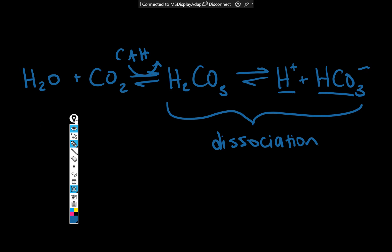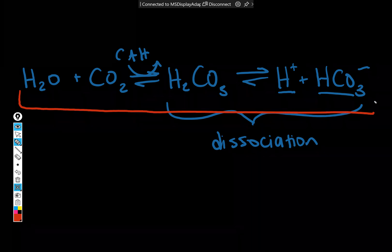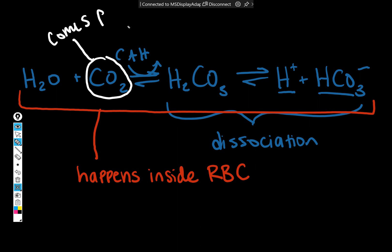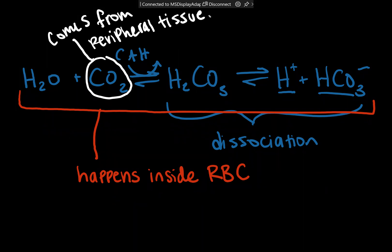So with regard to carbon dioxide transport in the plasma, this reaction is happening inside of the red blood cell. This comes from the peripheral tissue. So when you see the diagram of gas exchange during internal respiration, and you see the CO2 moving from the cells of whatever tissue we're in into the red blood cell, that's where this CO2 comes from.